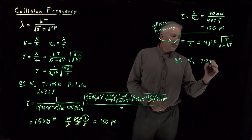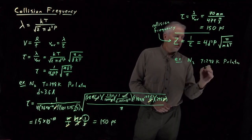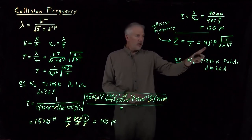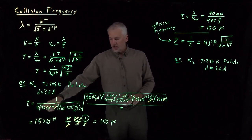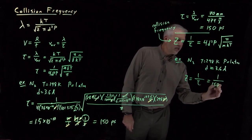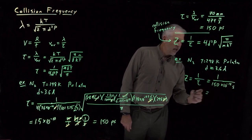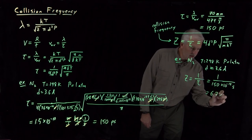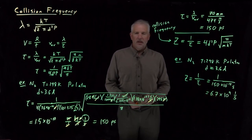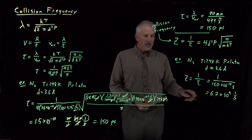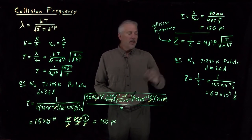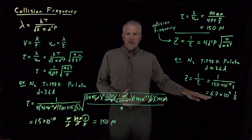For nitrogen at 298 K, 1 atmosphere, with molecular diameter 3.6 angstroms, we can simply take one over the collision time already calculated: 1 over 150 picoseconds, or 1 over (150 × 10⁻¹² seconds). That gives 6.7 × 10⁹ per second — 6.7 billion collisions per second. A nitrogen molecule traveling roughly 70 nanometers between collisions at this velocity experiences a collision with another molecule about 6.7 billion times per second.